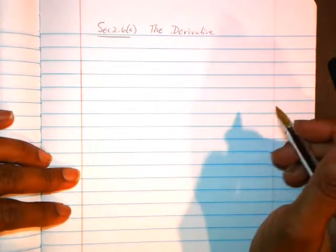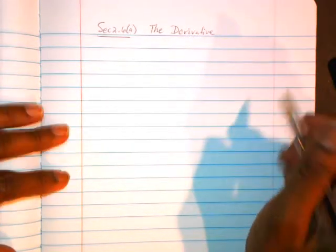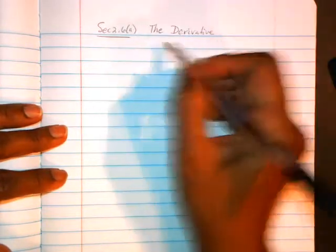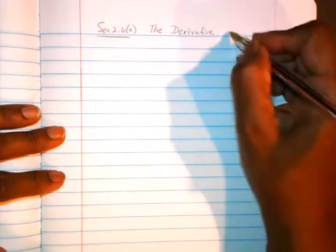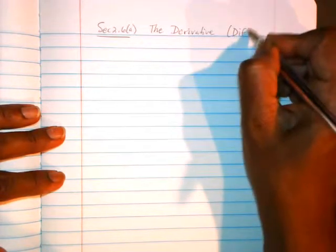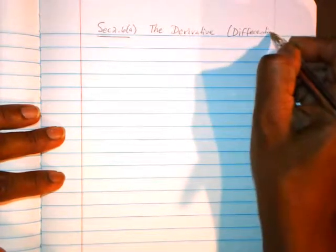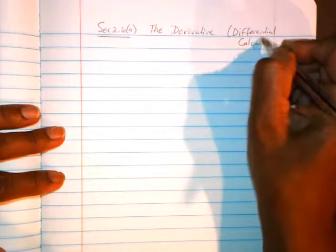Okay, it's section 2.6a. The title is The Derivative. The derivative is part of one of the branches of calculus called Differential Calculus. So this is pretty much what we'll be doing for the rest of this course, and that is Differential Calculus.